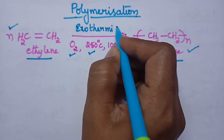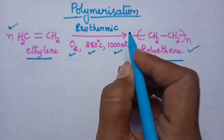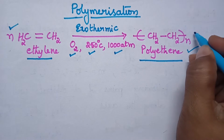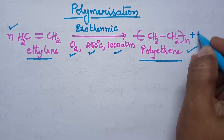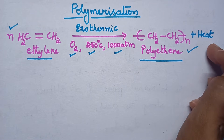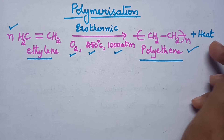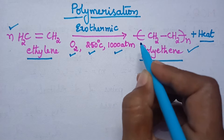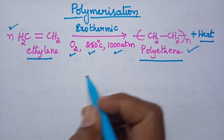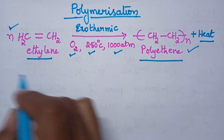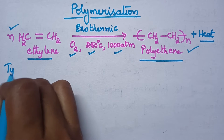The most important feature of polymerization is that the reaction is highly exothermic — that means polymerization is accompanied by the release of heat energy. Therefore, heat control is the major task during a polymerization reaction. Let us now discuss in detail about the types of polymerization.